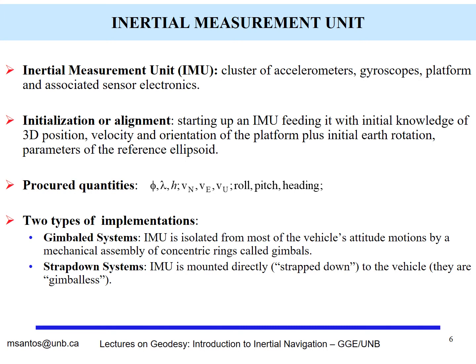There are two types of implementations: the gimbal systems and the strap-down systems. In gimbal systems, the inertial measurement unit is isolated from the vehicle's attitude motions by an assembly of concentric rings called gimbals. Currently, systems use the concept of being strapped down — mounted directly to the vehicle — and are called gimbal-less systems.